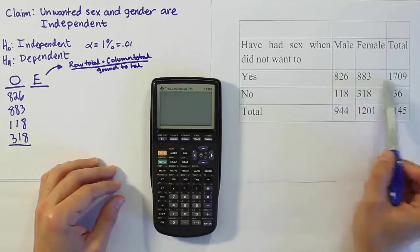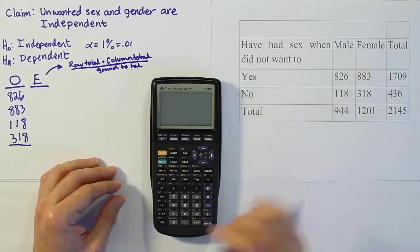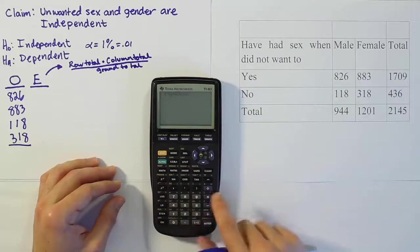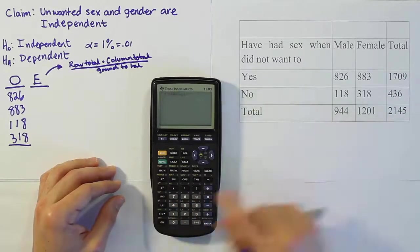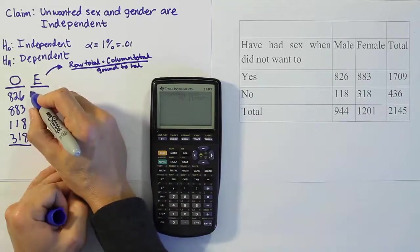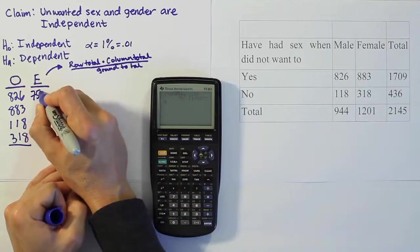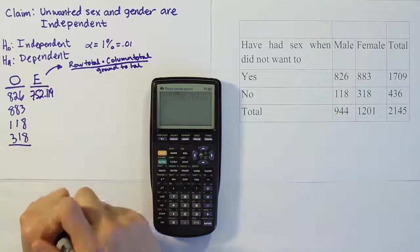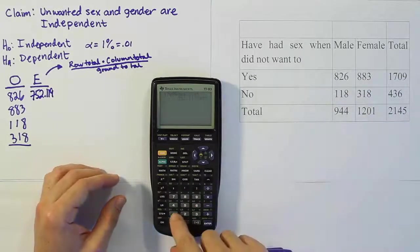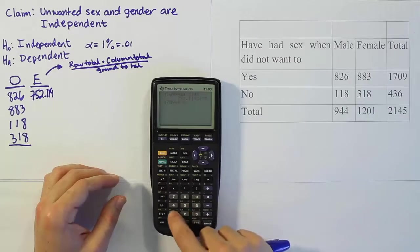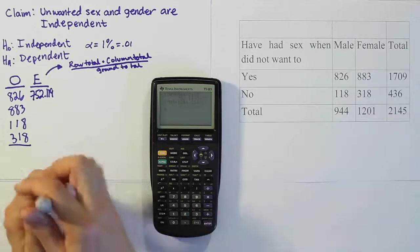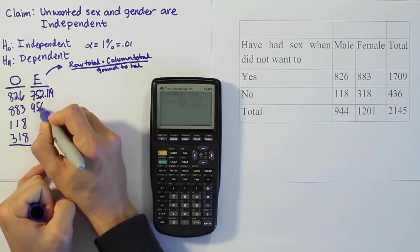Looking at the first cell where 826 is, the row total is 1709. So 1709 times the column total 944 divided by the grand total 2145. When we do that we get 752.119. Now we're going to do the same thing for 883. It'll be 1709 times 1201 divided by 2145. When we're done with that we get 956.881.